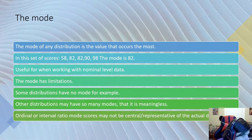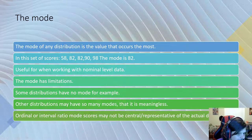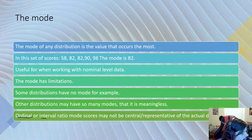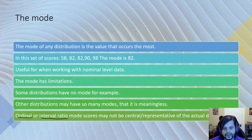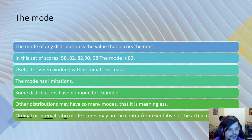Ordinal data is the next level. You're still in categories, but now you have rank value within those categories. For example, socioeconomic classes — working class, middle class, upper class — are ranked and ordered, but they're more generic groupings rather than exact numbers.